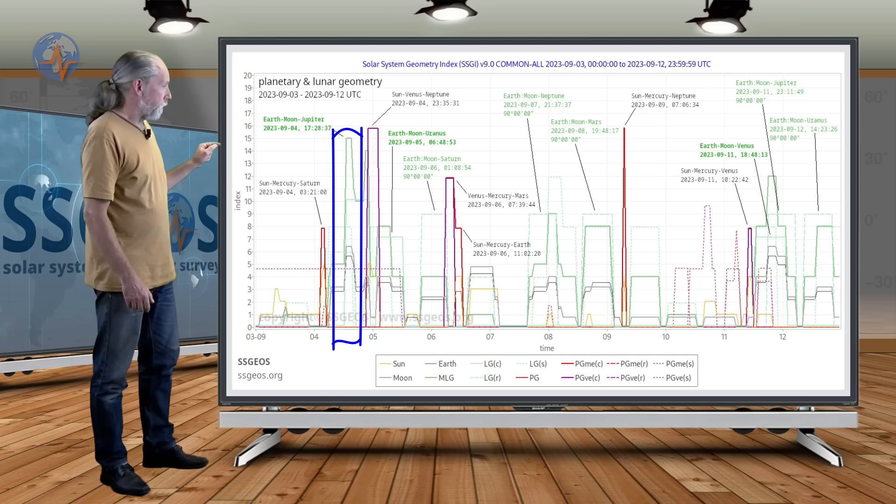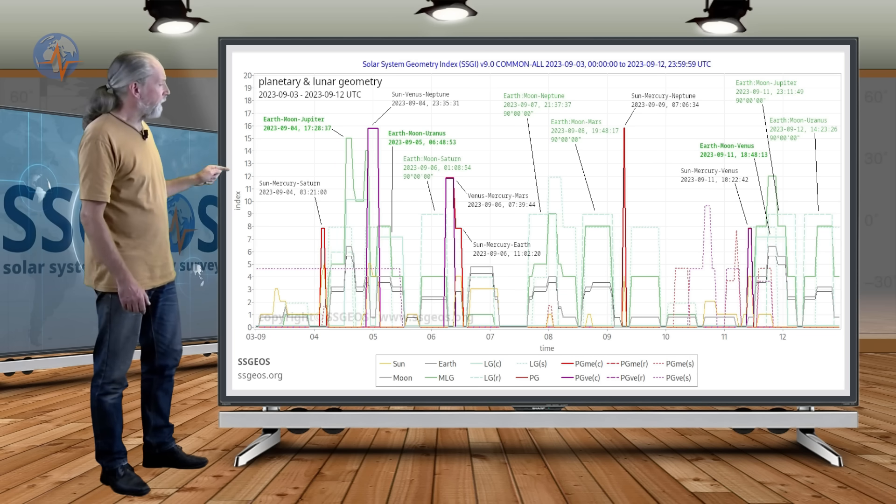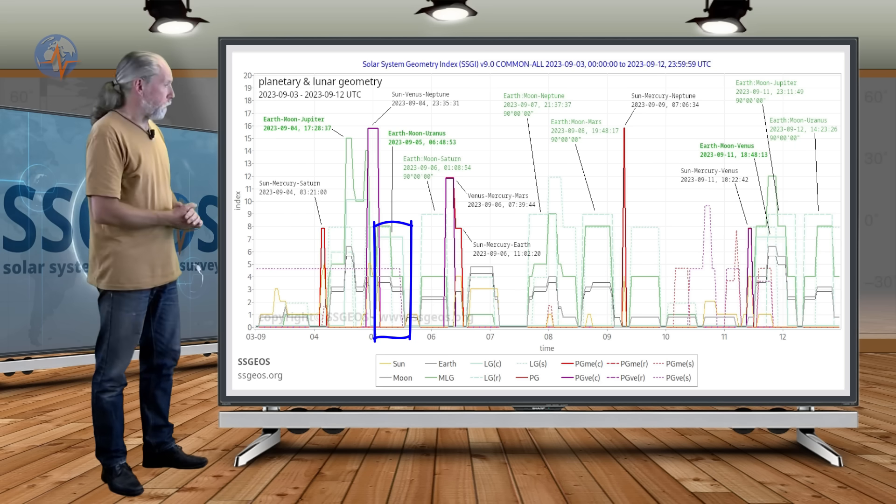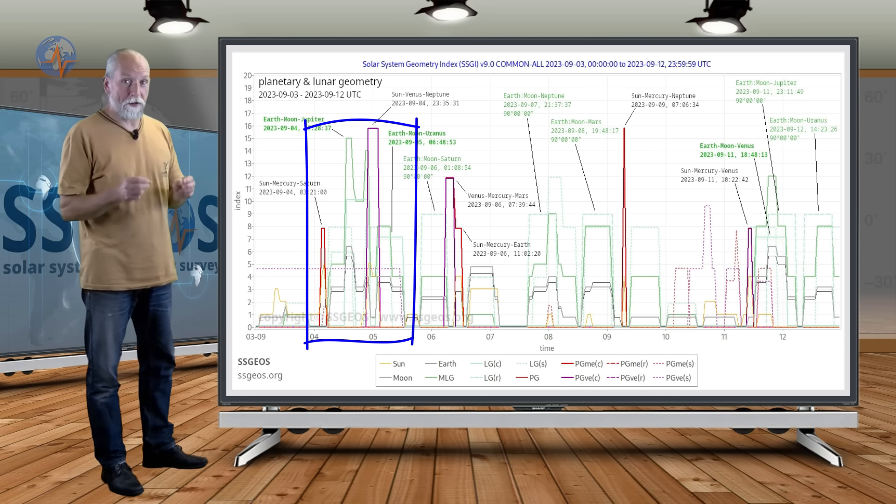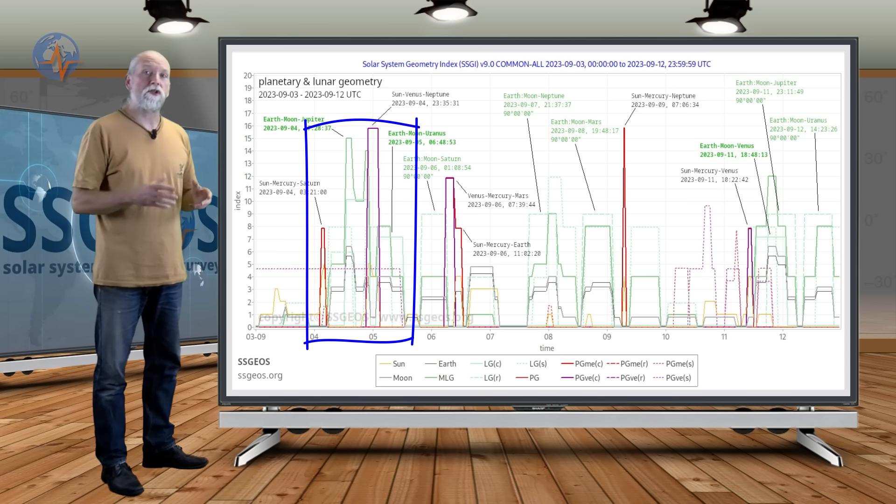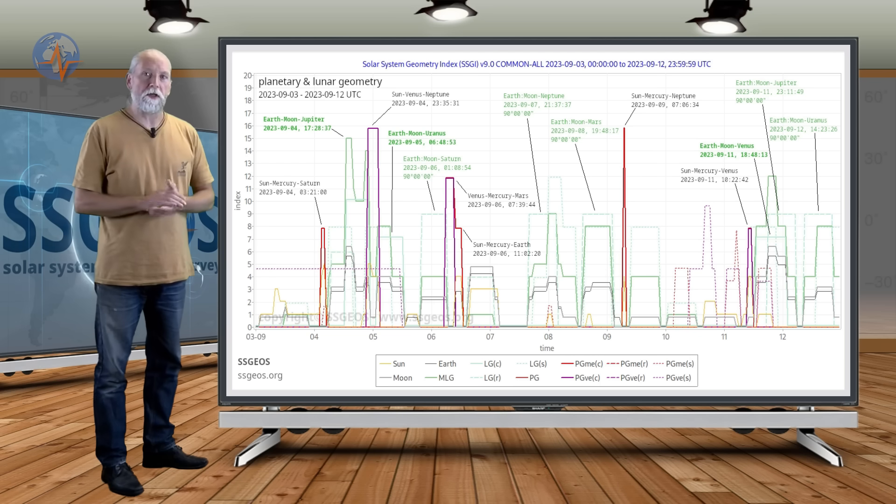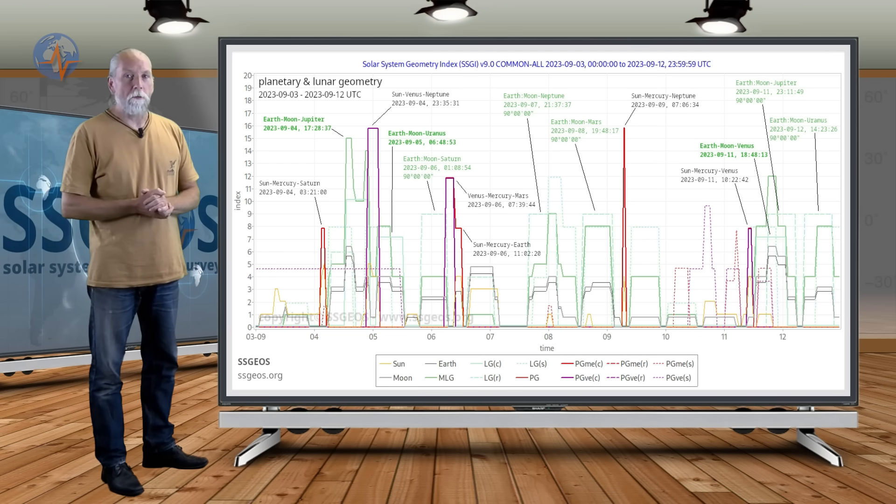Then several hours later, Earth-Moon-Uranus as well. So we have two lunar conjunctions, and both follow two planetary conjunctions, all happening tomorrow. As a result, we could see an obvious seismic increase, clustering of strong earthquakes, and it could include a mid to high 7 magnitude earthquake approximately from the 5th to the 7th.